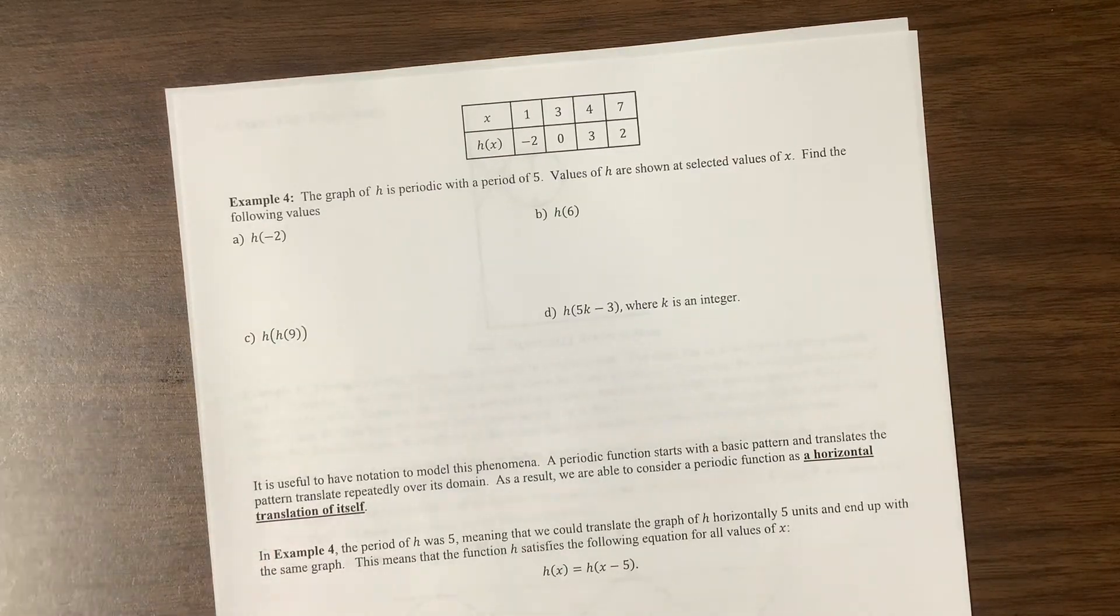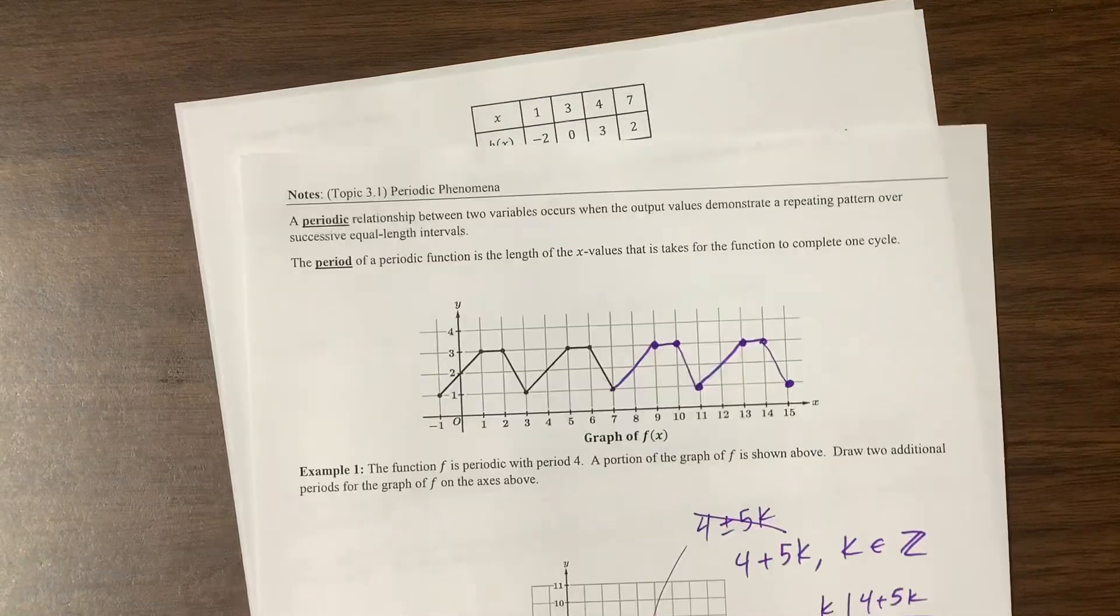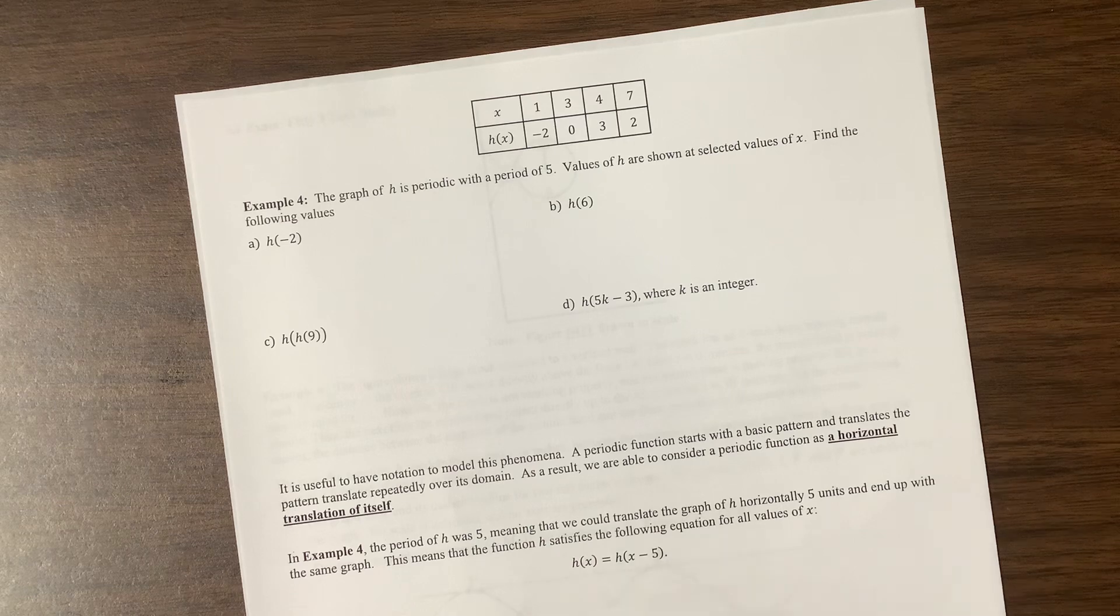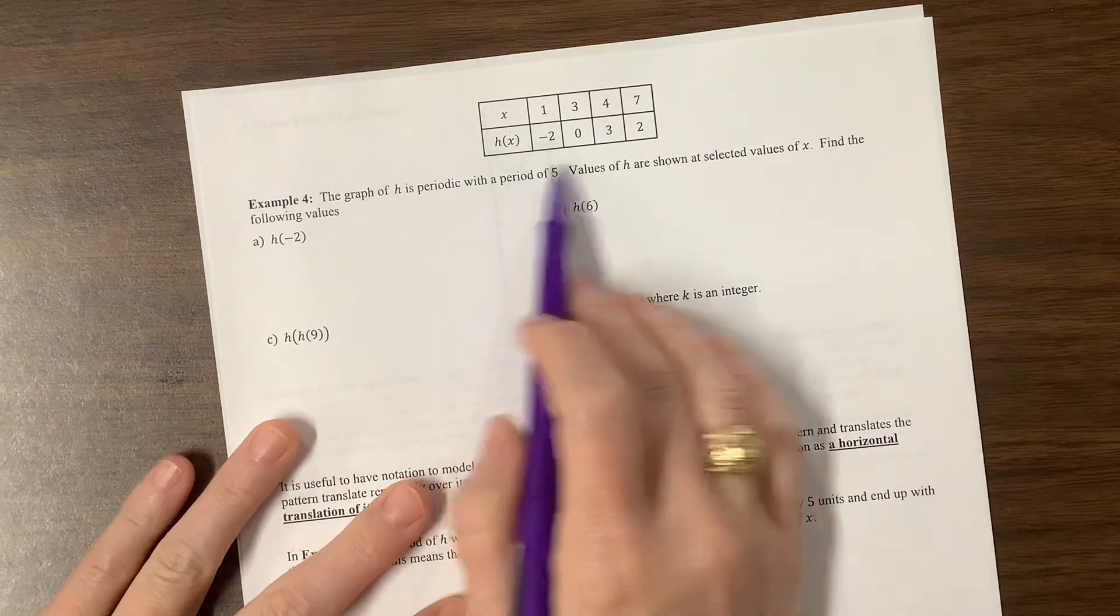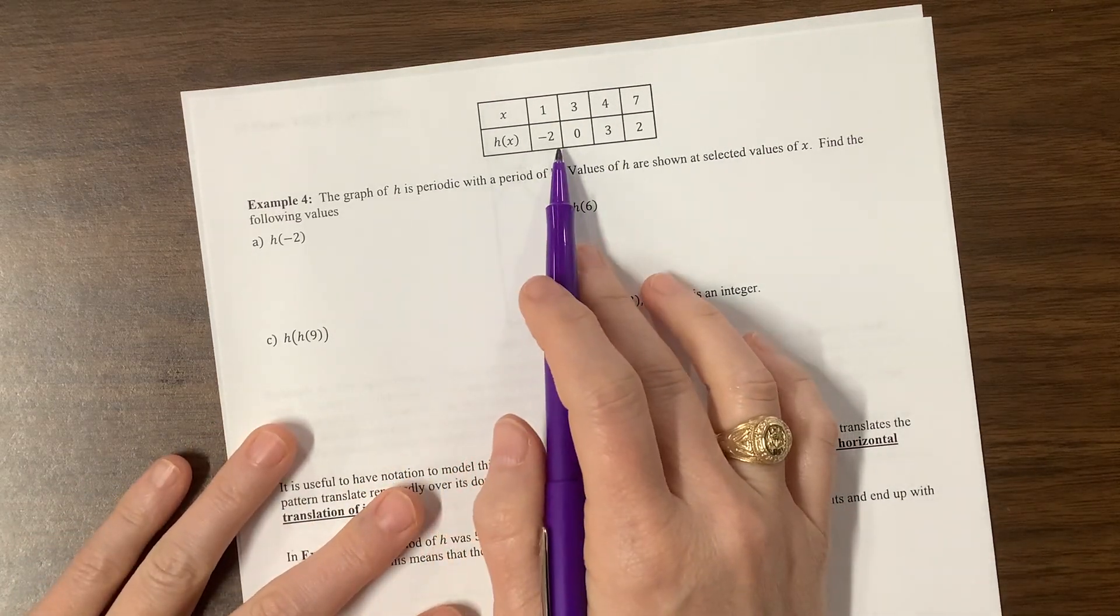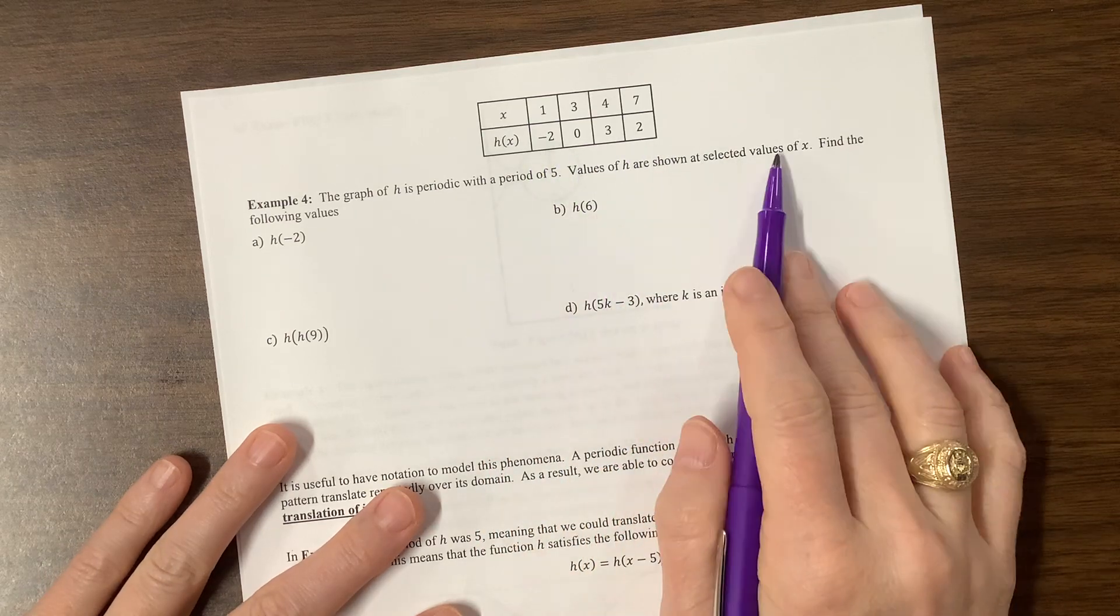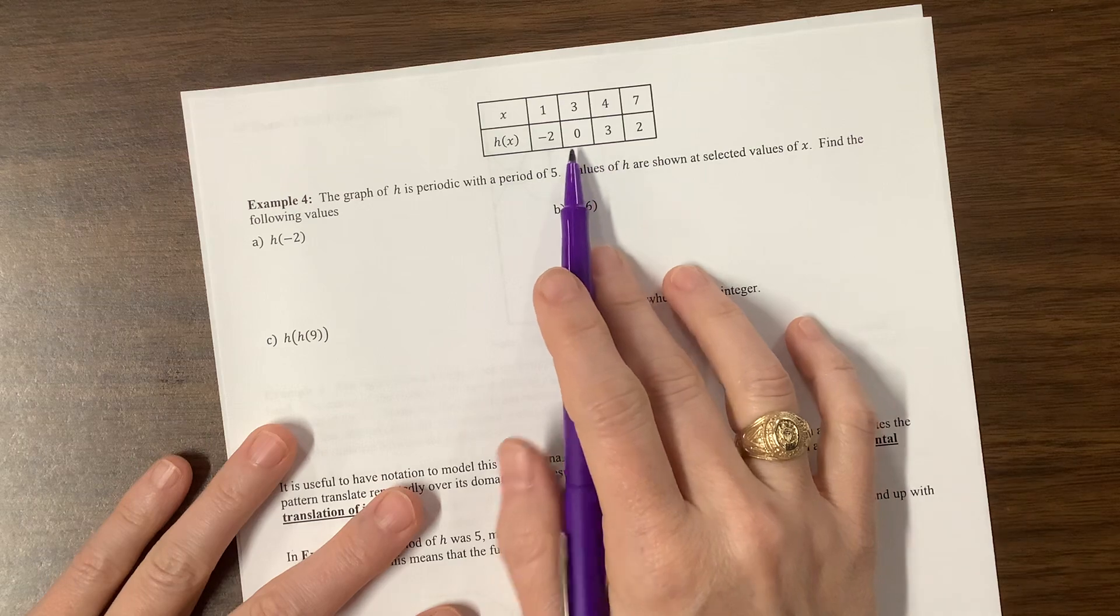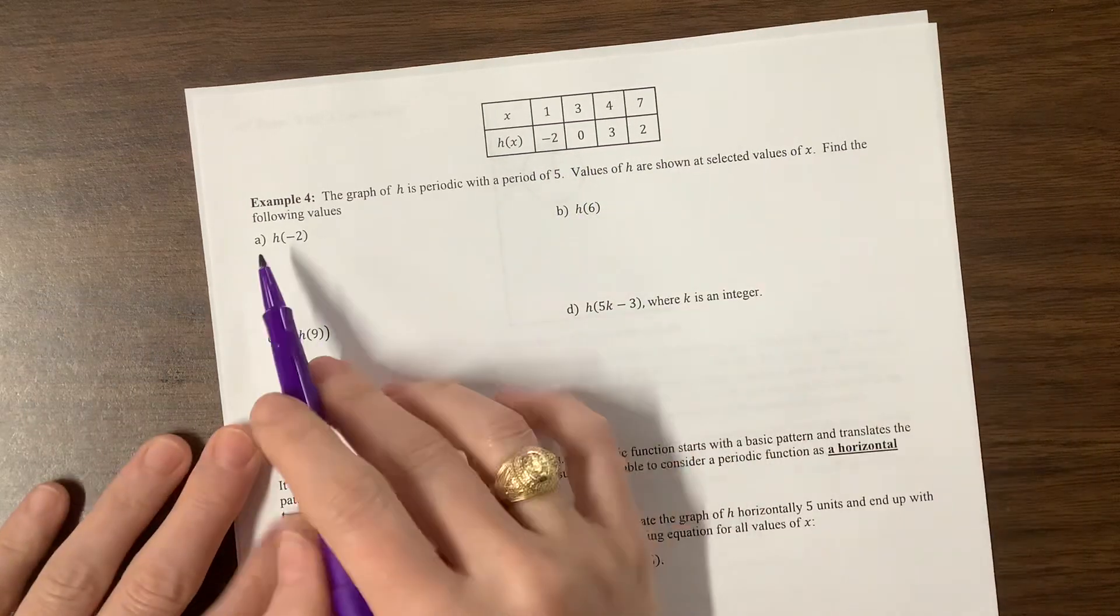We're continuing on with the notion of periodic phenomena. So then they tell us here, a graph of H is periodic with a period of 5. So values of H are shown. Notice they didn't give us enough to figure out what's really happening. They gave us a few random ones. Find the following values.